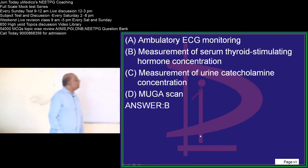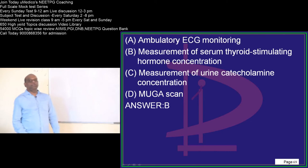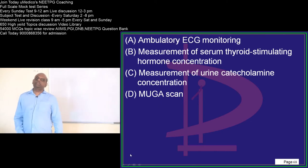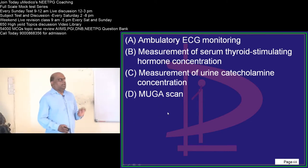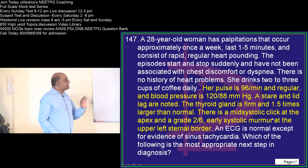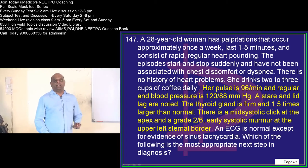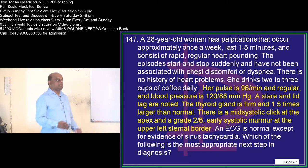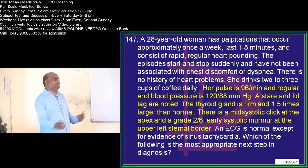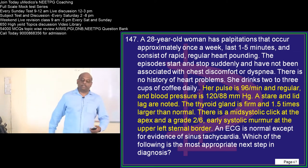So how do you want to manage this scenario? Whenever a patient is having sinus tachycardia with murmurs, there is a hyperdynamic circulation. So what are all the causes for the development of hyperdynamic circulation?